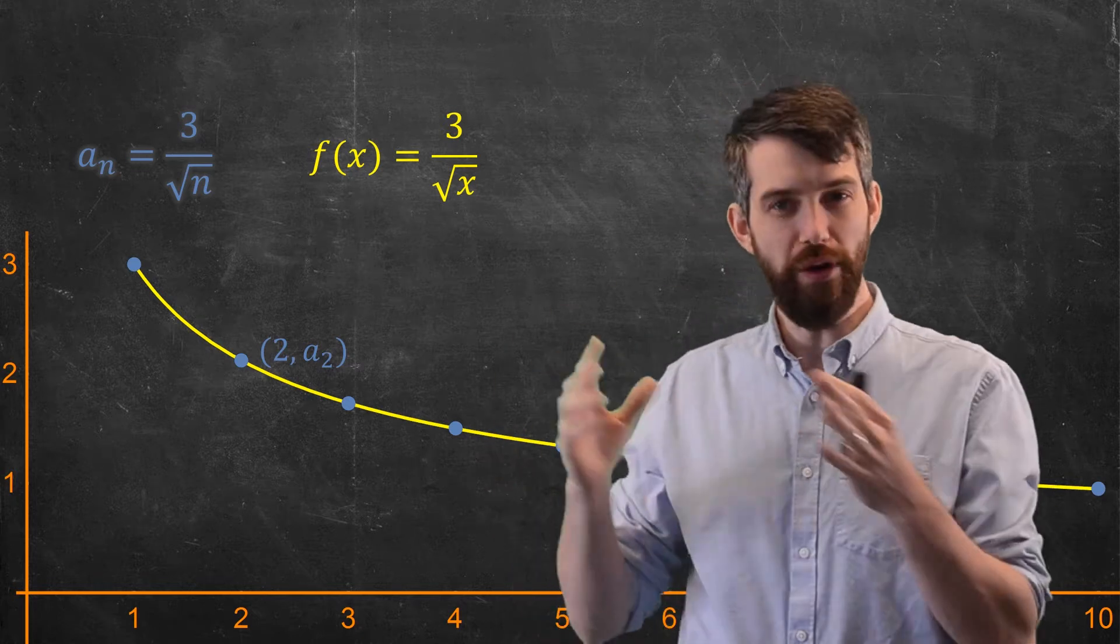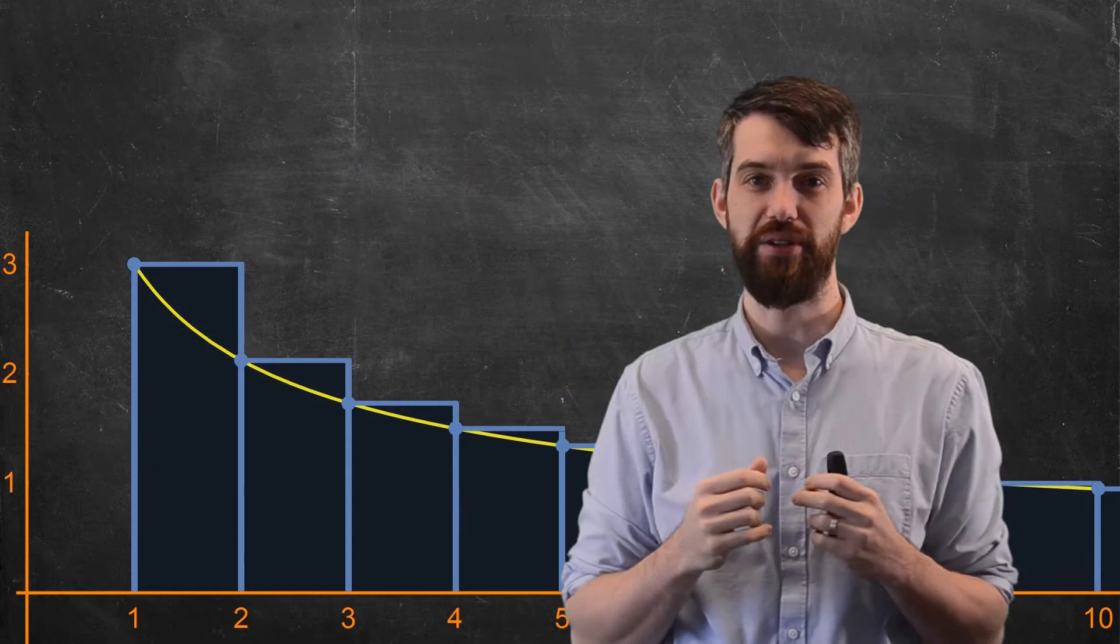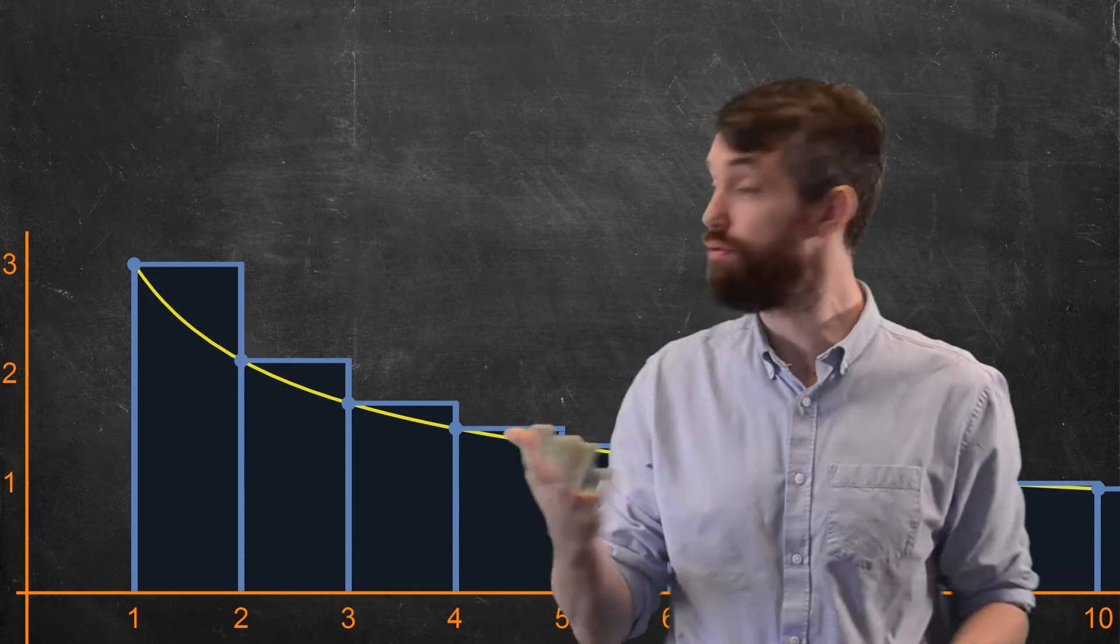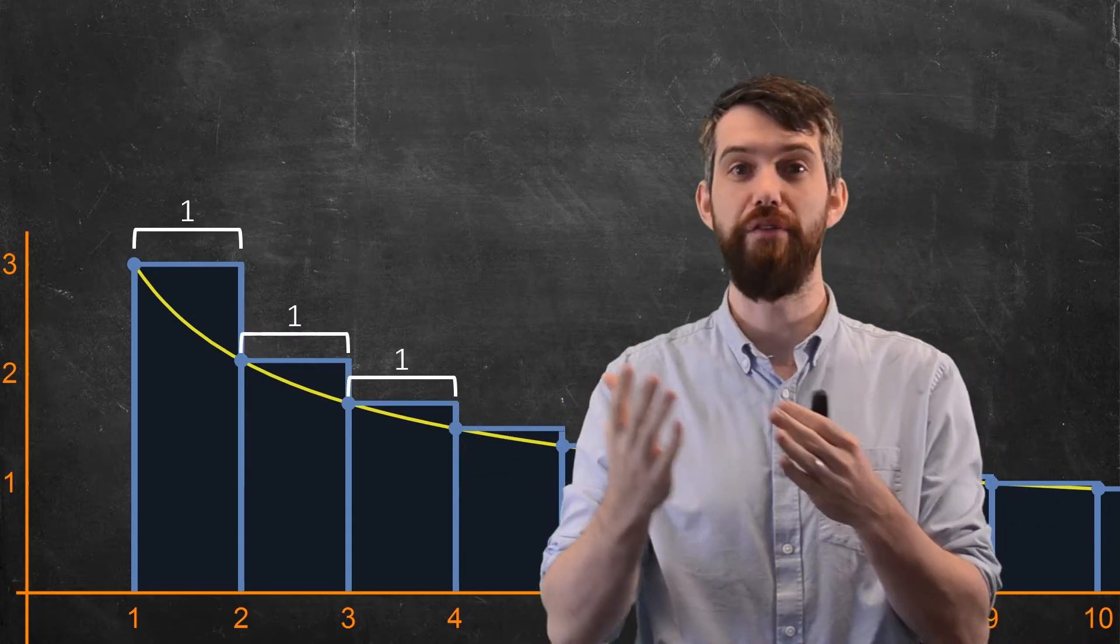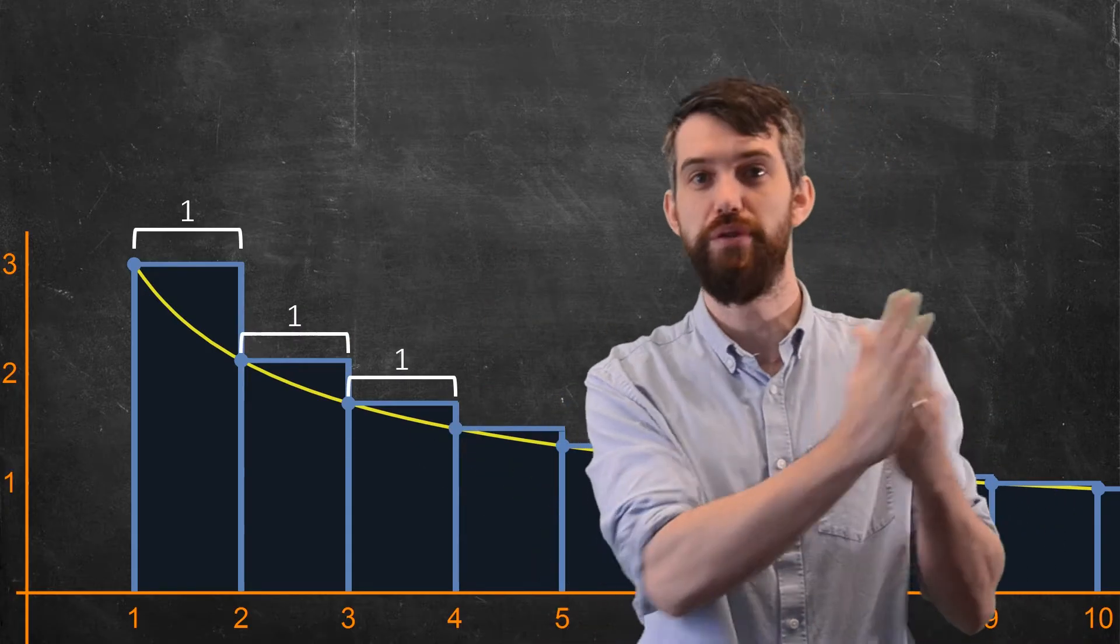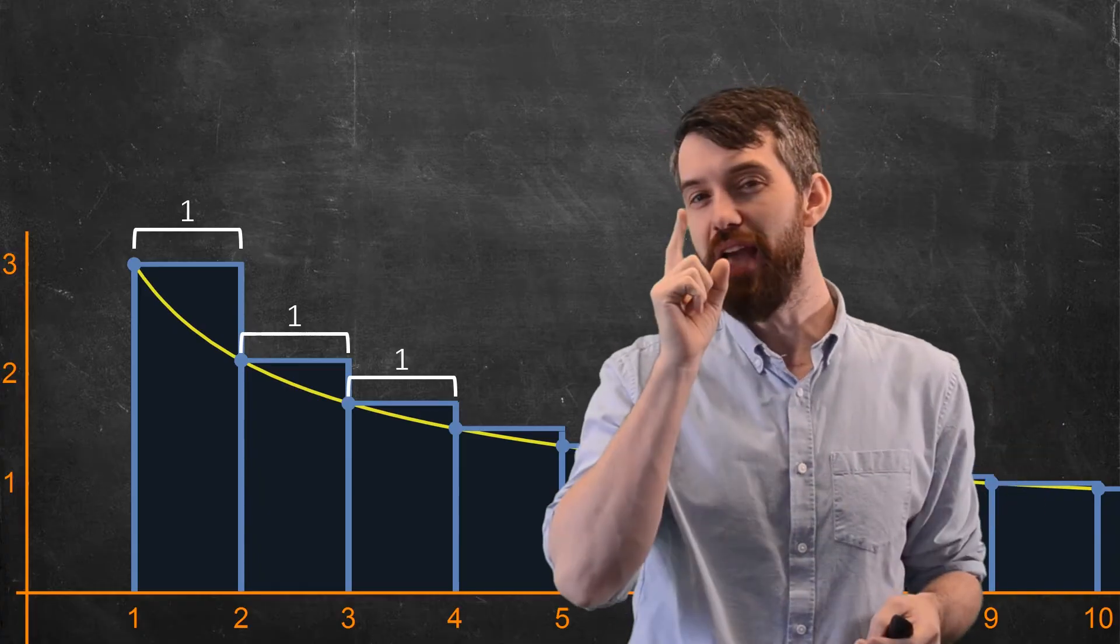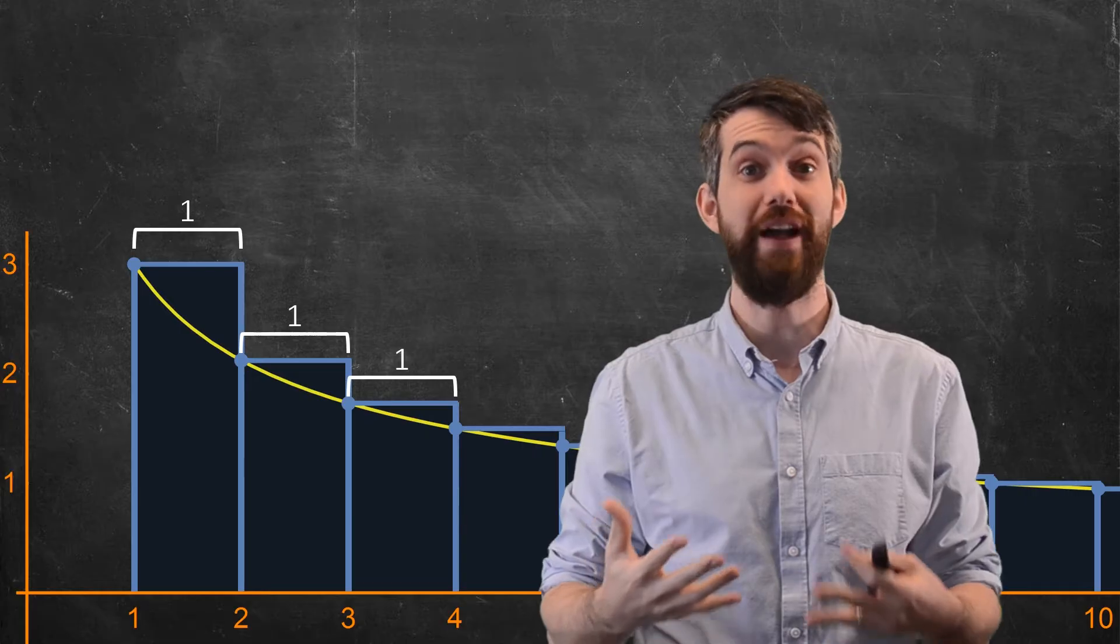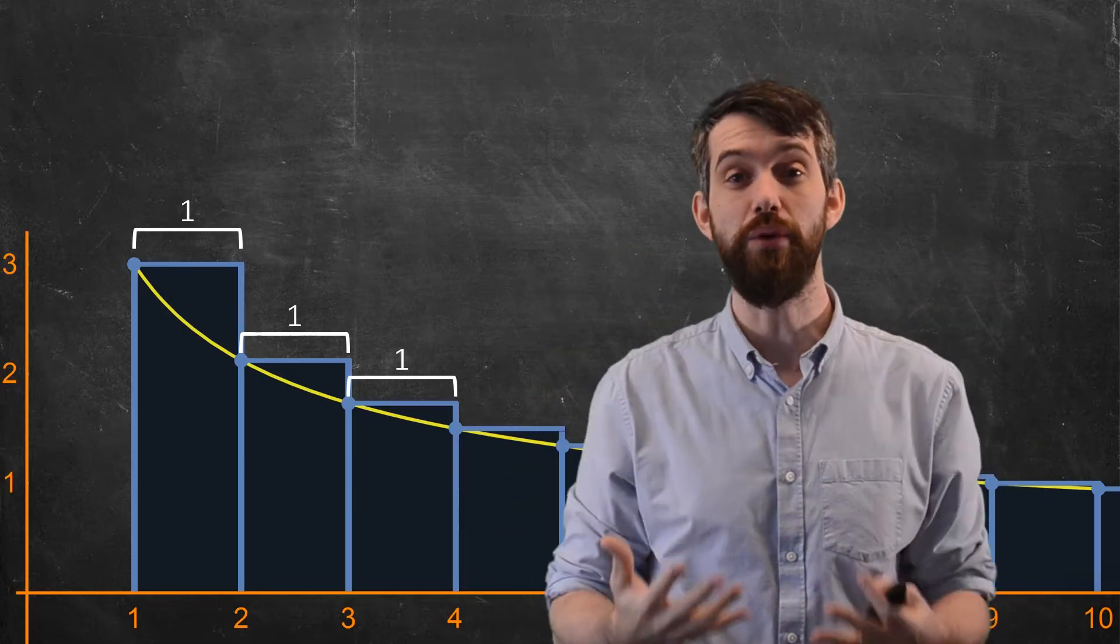Now what I'm going to do is overlay on this graph a bunch of rectangles. And the idea for these rectangles is that the widths of them is all just going to be the values 1, going from 1 to 2, 2 to 3, and so on. But the height of these are given by the left endpoints of the curve, as in, they're given by the sequence values.